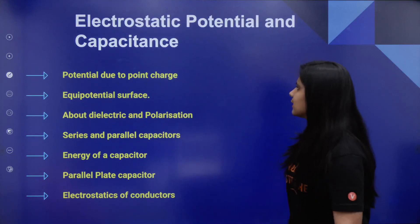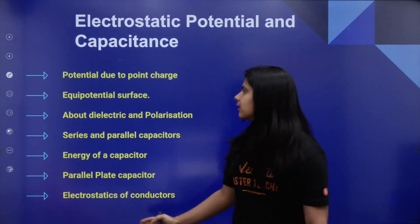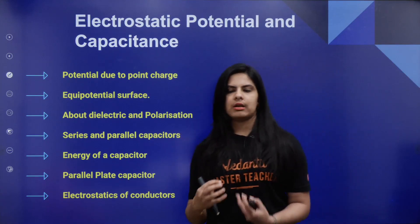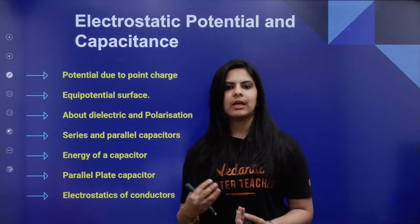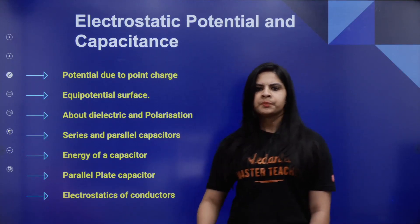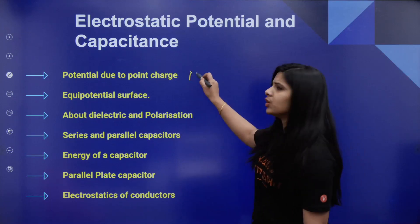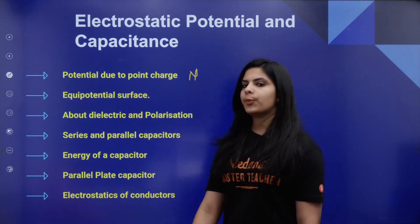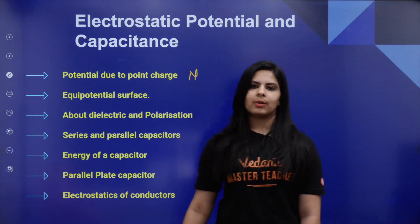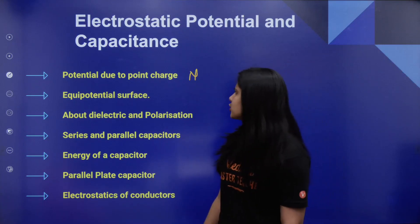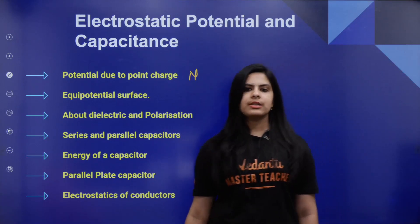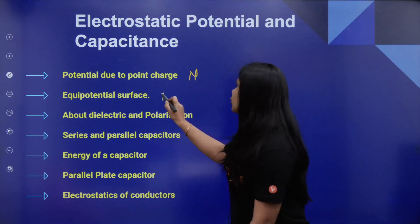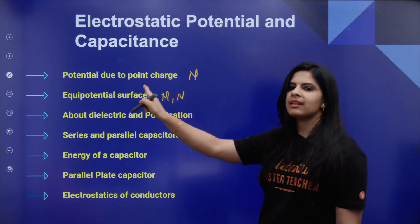Next is Electrostatic Potential and Capacitance. This is an important chapter. We are going to cover potential concepts and expect MCQs and numericals. We are going to expect potential due to point charge and equipotential surfaces — MCQs and numericals in this zone.